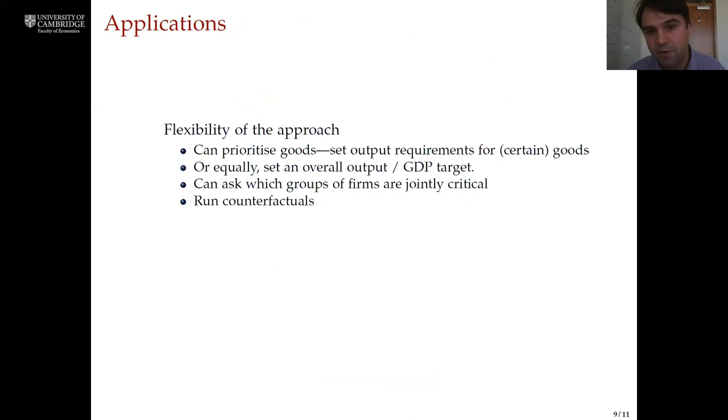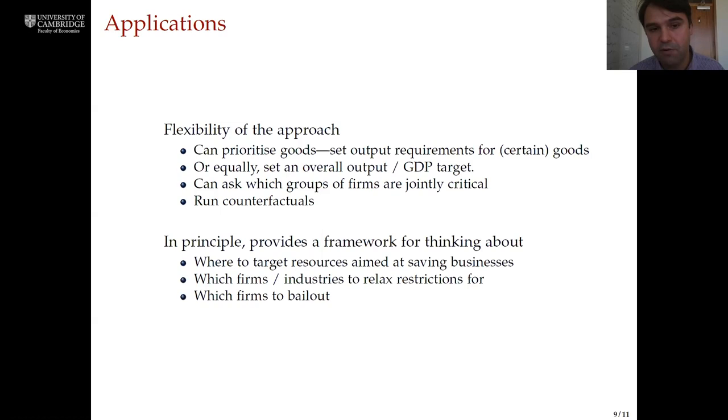Our approach has a lot of flexibility in how it's applied. We can apply a production goal for the government related to a couple of specific products as we hypothesized in our initial example, or equally we could take a much more general goal of trying to achieve a certain output capacity for the entire economy. We can also consider bespoke counterfactuals. What happens if a given town has to be shut down because of an outbreak of the virus? What happens if a group of firms that are in financial distress simultaneously fail? And so on. More generally our approach provides a framework for thinking about where government should target its resources in ensuring productive capacity in the economy. Which firms should be bailed out if many are in distress? Which industries should we relax restrictions from to enable workers to work in closer proximity? And so on.